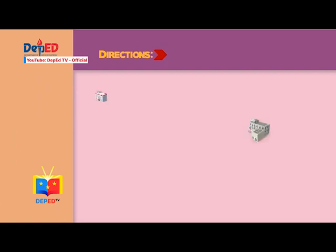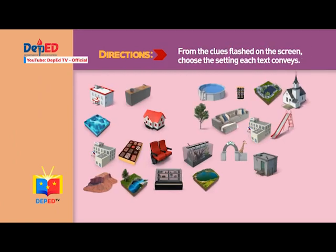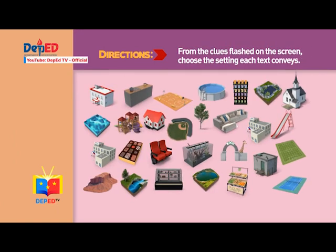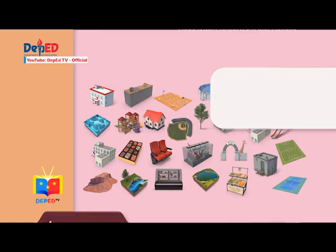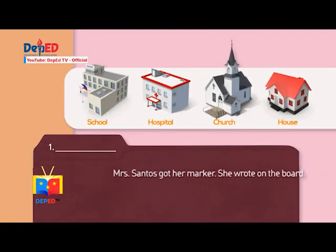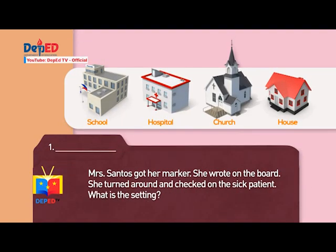Directions: From the clues flashed on the screen, choose the setting each text conveys. Number one: Mrs. Santos got her marker. She wrote on the board. She turned around and checked on the sick patient. What is the setting? Clues: A school. A church. A hospital. A house.